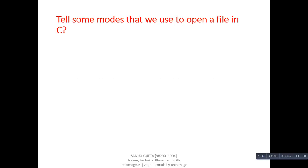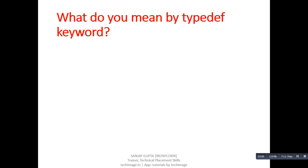Next question: tell some modes that we use to open a file in C. The modes are: w, a, r, r+, w+, and a+.